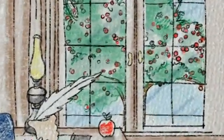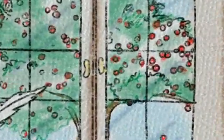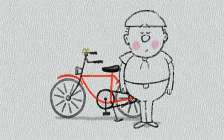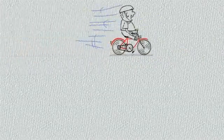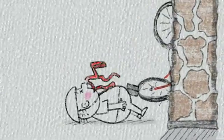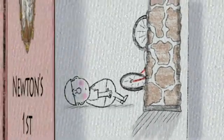What Newton recognized was that things tend to keep on doing what they are already doing. So when your bicycle is stopped, it stays stopped. And when it is going, it stays going. Objects in motion tend to stay in motion, and objects at rest tend to stay at rest. That's Newton's first law.